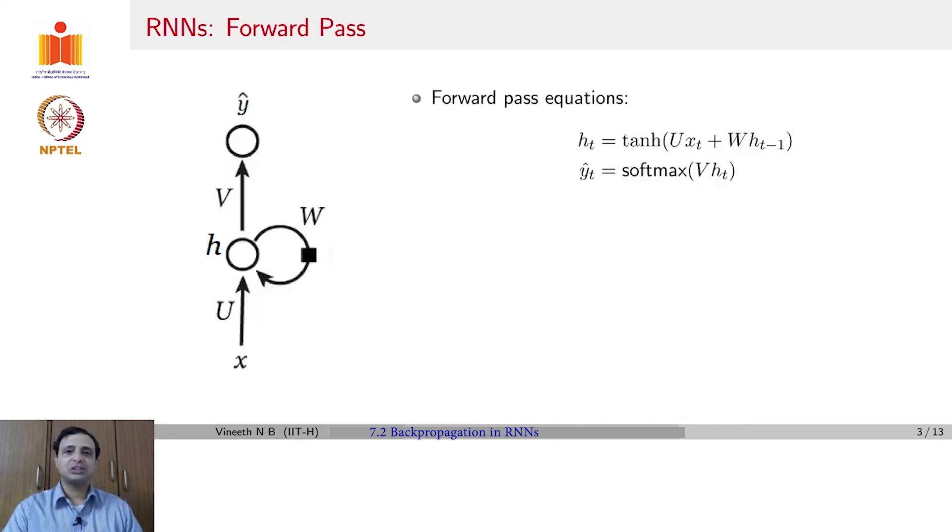Moving on now to backpropagation in RNNs. Let us first revisit the forward pass in RNNs, assuming that this is now your diagram for visualizing an RNN. You have an input x, weights u, hidden state h, weights w, then weights v, that take you to an output y hat. Then your forward pass equations are given by h_t equals tanh of u x_t plus w h_{t-1}.